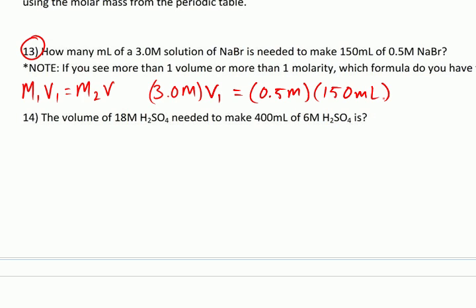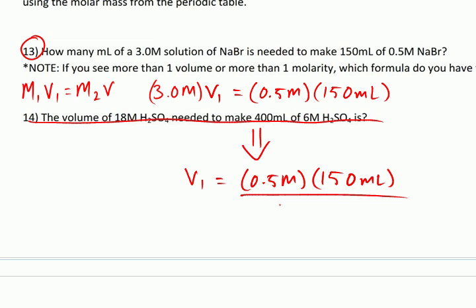So, this is similar to the one I just did. You need to do a little bit of algebra to get V1 by itself. So, you should get, ignore this problem right here. But, if you do the algebra, you should get V1 equals 0.5 molar times 150 milliliters divided by 3 molar.